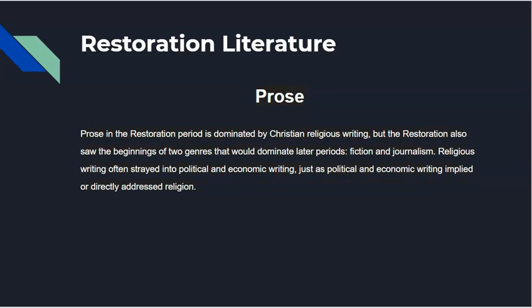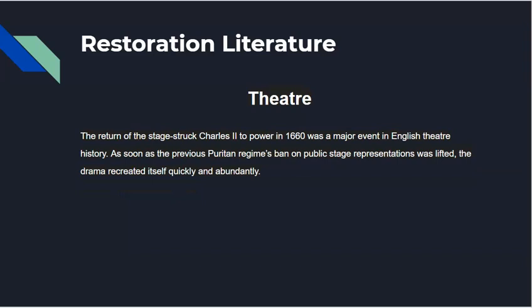Prose in the Restoration period was dominated by Christian religious writing, but it also saw the beginning of two new genres: fiction and journalism. Religious writing often strayed into political and economic writing, as political issues were tied to economic issues and questions of who would run the country. Then of course we see the return of the stage — body comedies, and once the Puritan regime was gone and no longer allowed to censor the theater, playwrights had more freedom. A lot of drama was recreating itself, and women were now on stage. That is the British Restoration in the 18th century.